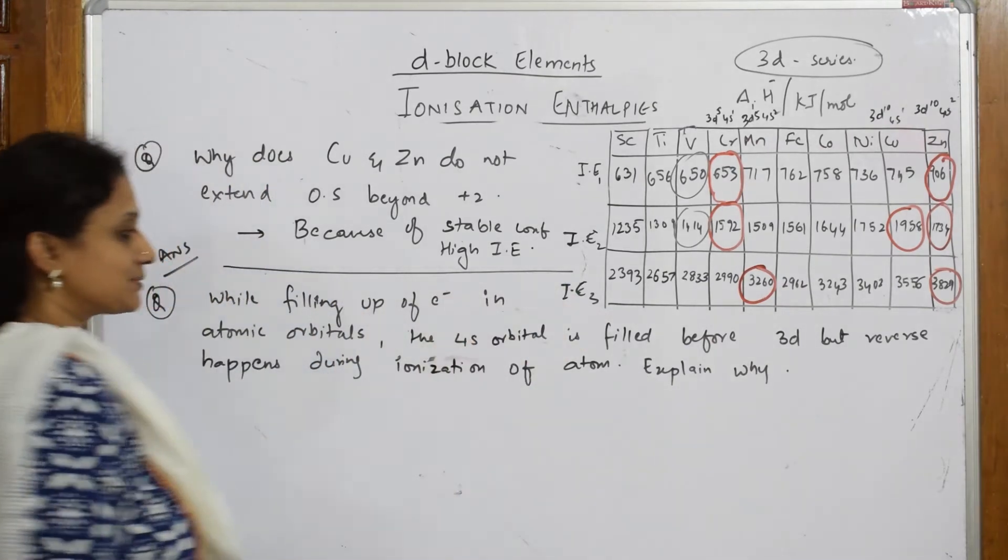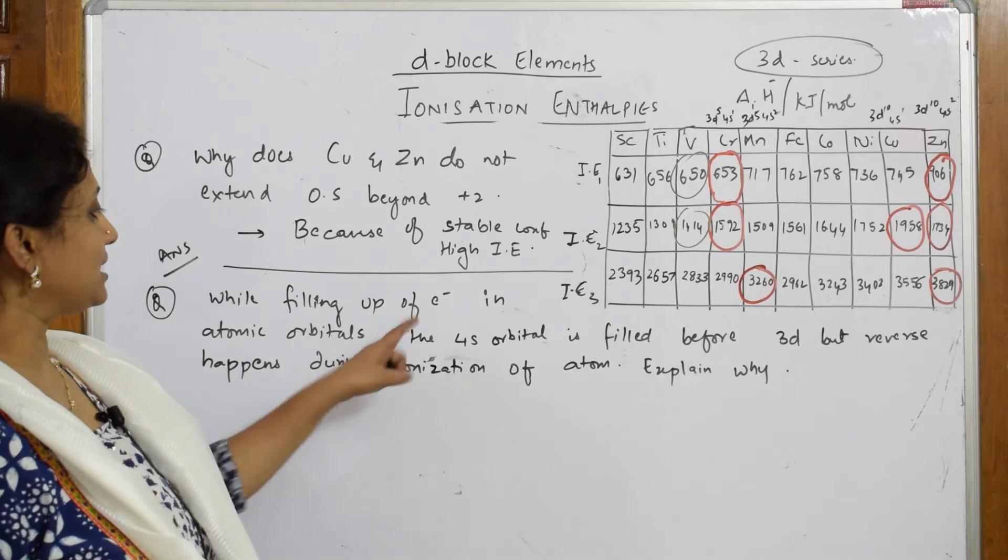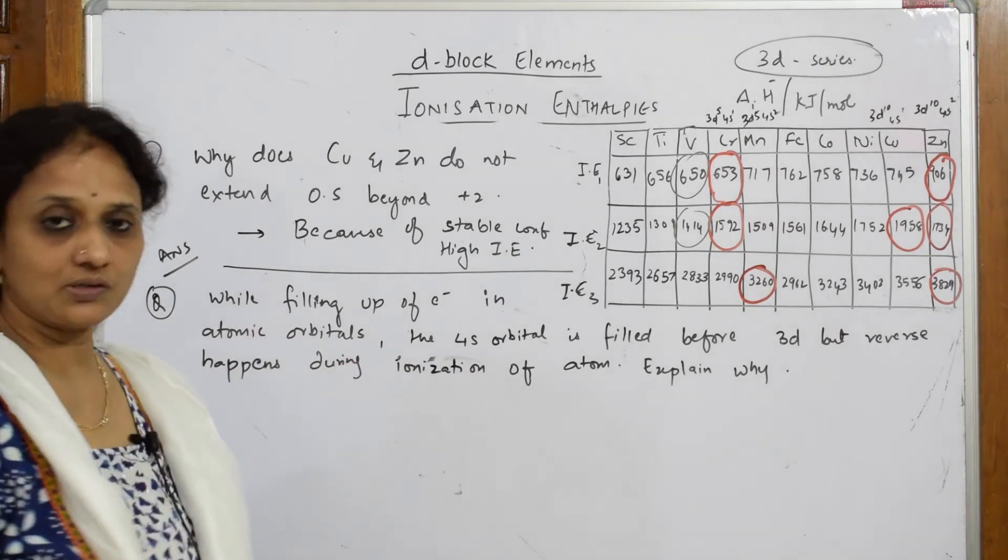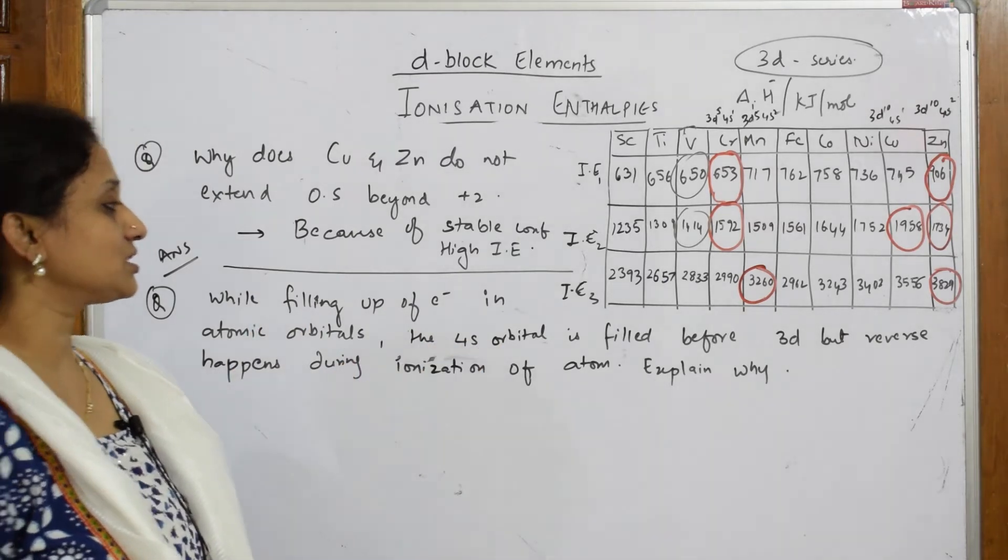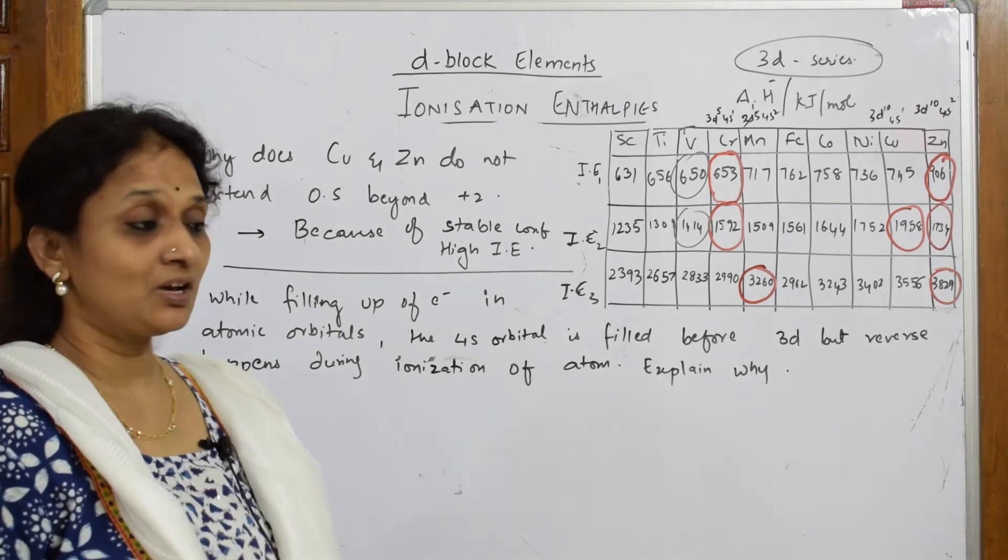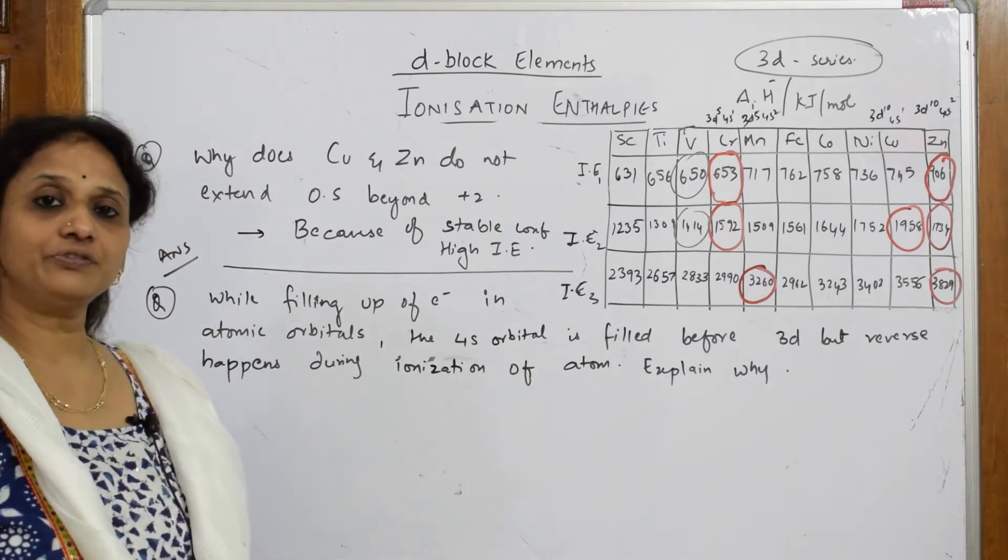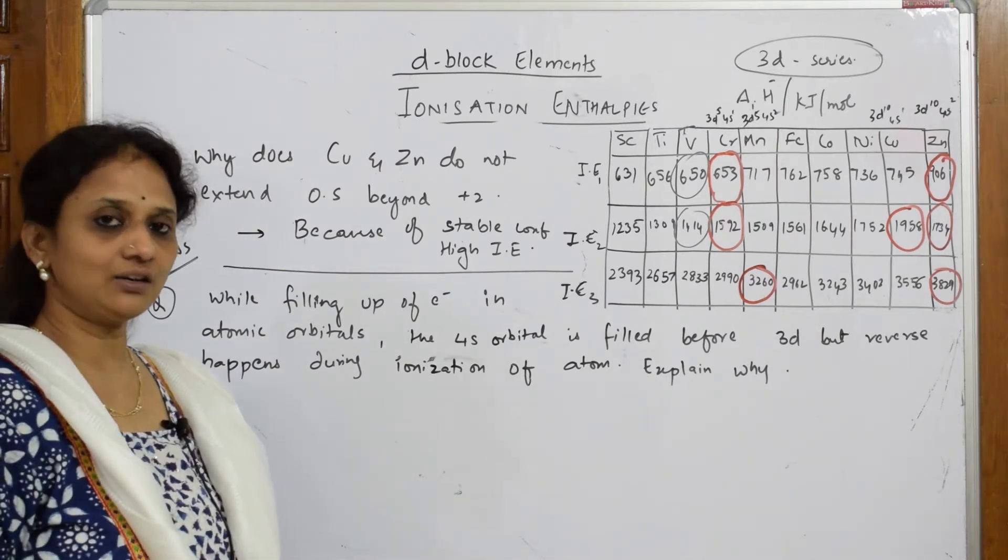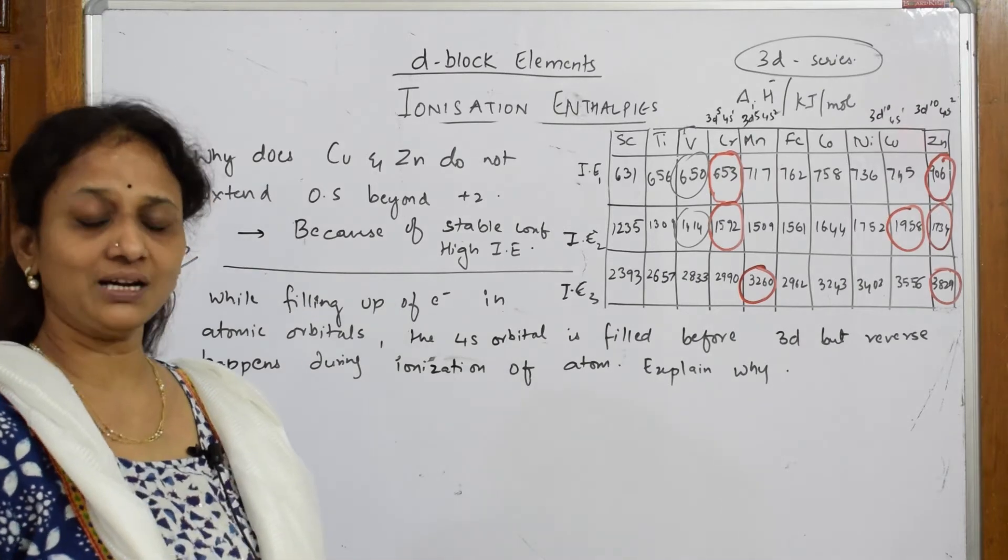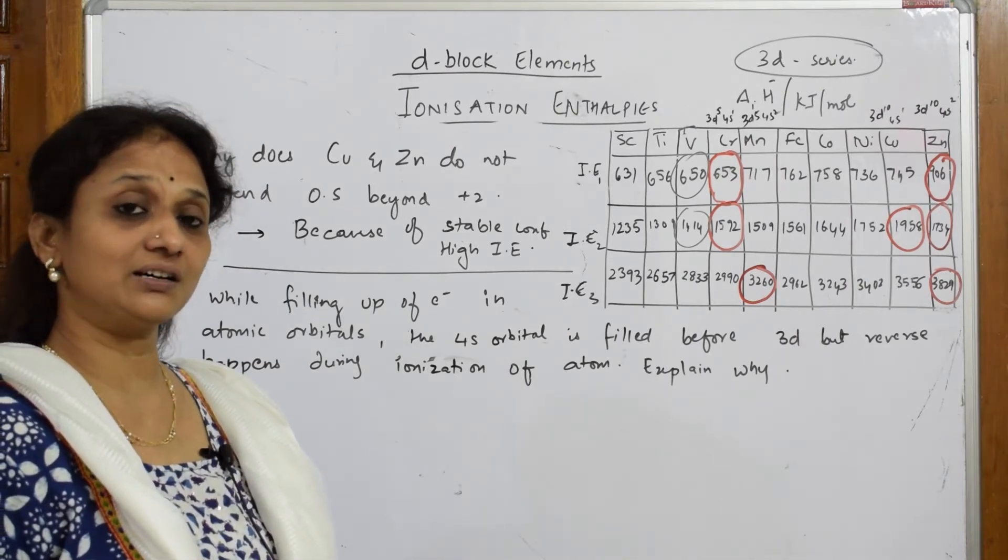Now done. Let us come back and do this question. This is a bit tricky but it's easy. While filling up electrons in atomic orbitals, the 4s orbital is filled before 3d, but the reverse happens during ionization of an atom. Explain why. They're asking us: whenever you're filling an electron you first fill s and then fill d, but when you're removing an electron you first start with s and then d. What is the reason?